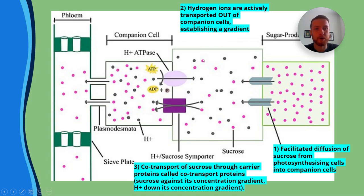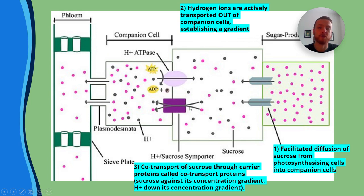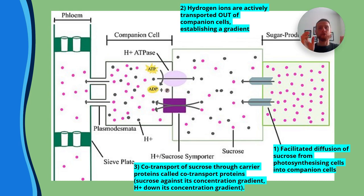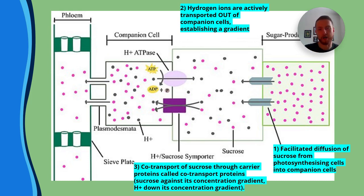There's less sucrose per unit area outside the companion cell, but more inside it, so sucrose is going against the concentration gradient. However, it's not directly using ATP here because the hydrogen ions are moving down the concentration gradient, bringing the sucrose with them. That's the idea behind co-transport — one ion moves down its gradient, bringing a sugar like sucrose against its concentration gradient.